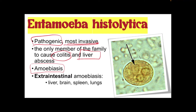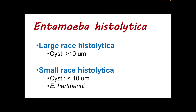Extraintestinal amoebiasis refers to infection of amoeba in organs other than the intestine, like the liver, brain, spleen, and lungs. There are two morphologically indistinguishable species of E. histolytica: Entamoeba dysenteriae (an old nomenclature) and Entamoeba dispar. We cannot distinguish E. histolytica from these parasites unless we use molecular diagnosis such as PCR, except microscopic techniques since they are indistinguishable. E. histolytica is also classified as large-race (greater than 10 micrometers) or small-race (less than 10 micrometers).